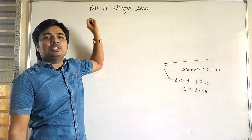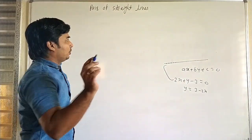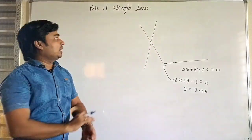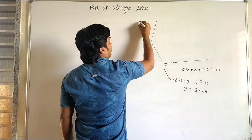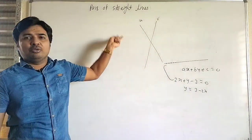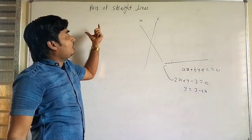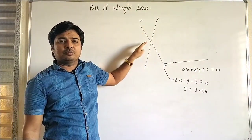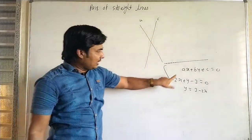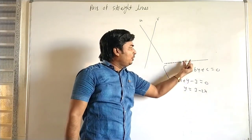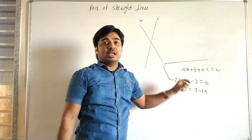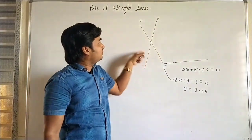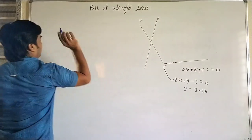Now we look at a pair of straight lines. A pair of straight lines means we consider two lines — we discuss not a single line but two lines which intersect each other or are parallel to each other. Suppose the first line is u and the second line is v. The first definition is the combined equation of lines — an equation which represents two lines.